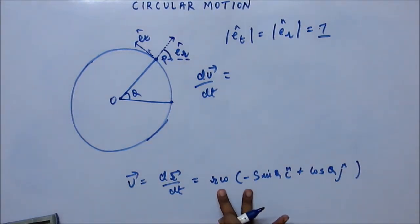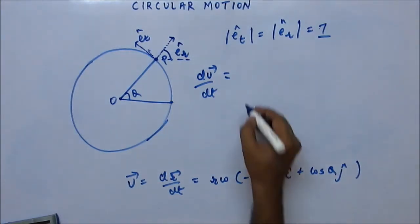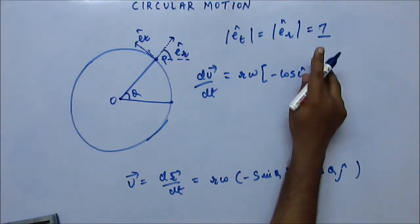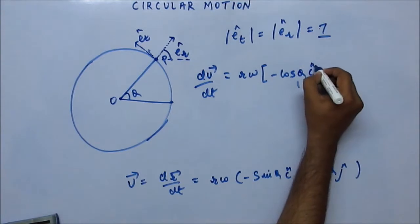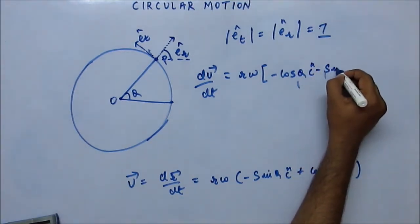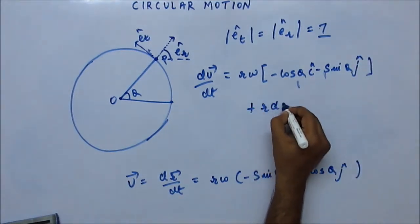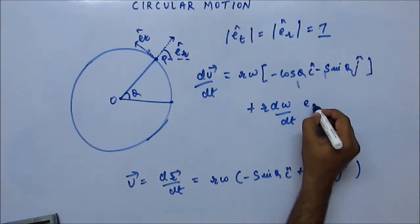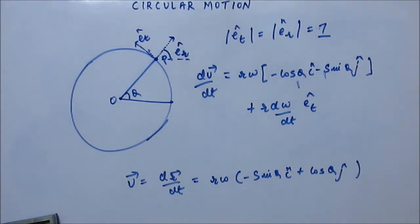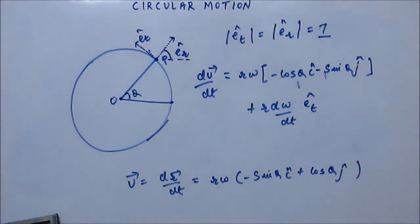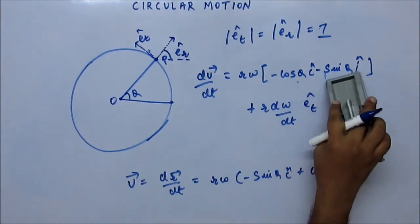Differentiate this keeping the other as constant, and then differentiate the second term keeping the first as constant. You know the chain rule? So when you do that, what you get is the second term. And this is minus E R cap.